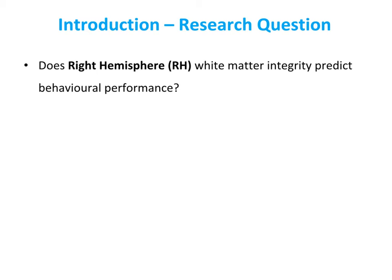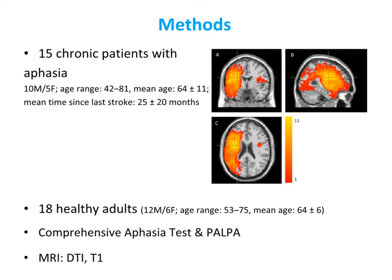In this study, we investigated whether right hemispheric white matter integrity predicts behavioral performance on various language tasks. We tested 15 chronic patients with aphasia following a left MCA territory stroke, and you can see the distribution of their lesions in the image on the right. We also tested a group of matched healthy volunteers. All the patients performed various language tasks, and all participants had a diffusion MRI scan, which allows us to look at white matter changes. Our analysis focused on fractional anisotropy, or FA. FA is a measure of diffusion anisotropy, which reflects both the degree of biological barriers to diffusion — for example, the myelin which wraps the axons — as well as the degree of complexity in the underlying white matter fiber architecture. I will refer to the various measurements of diffusion obtained from the diffusion MRI as reflecting white matter integrity.